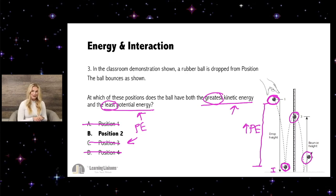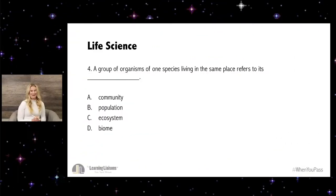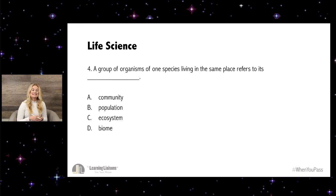Number four. A group of organisms of one species living in the same place refers to its: A, community; B, population; C, ecosystem; or D, biome. I'm going to give you 60 seconds to try it and then we'll go over it.